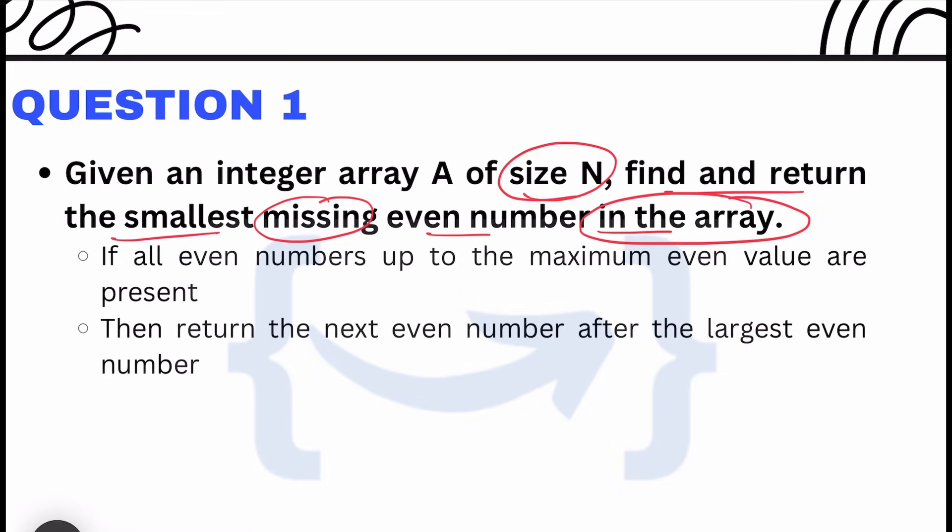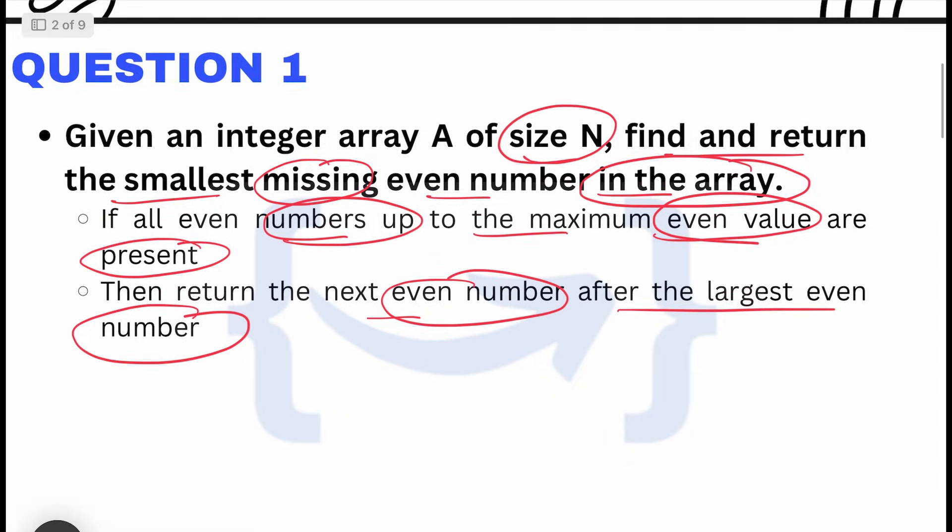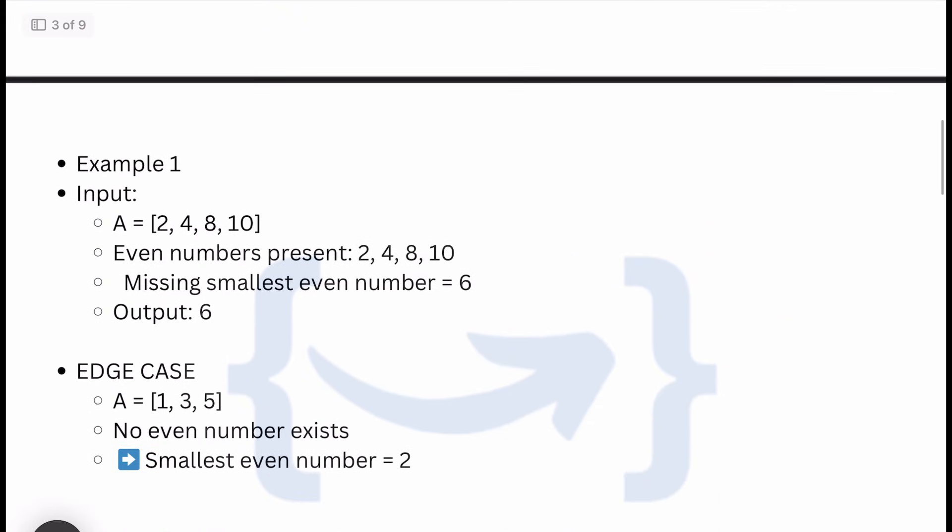If all even numbers up to the maximum even value are present, then return the next even number after the largest even number. This is an edge case you need to handle. When all even numbers are present up to the largest, return the next even number after it.